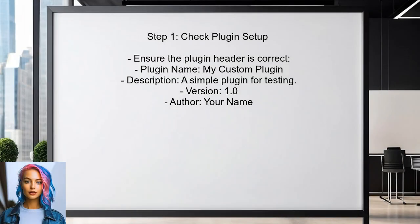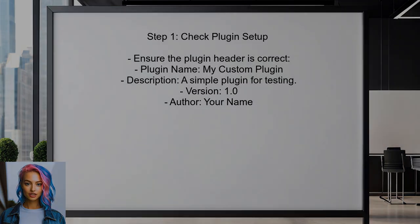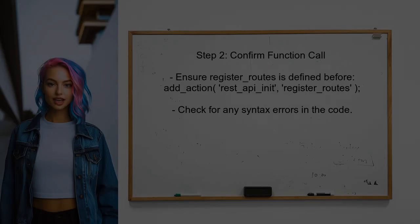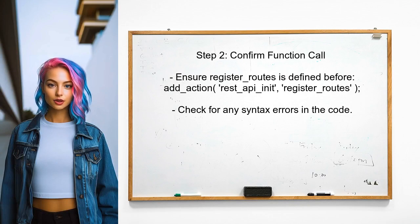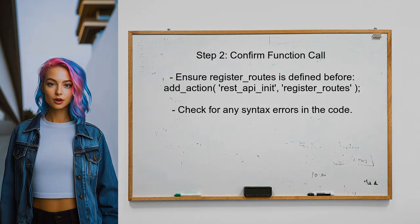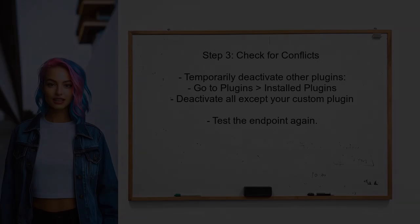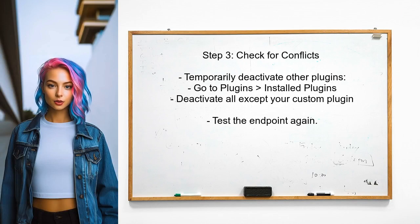To address the issue of the REST API init event not firing, the user should first ensure that their plugin is correctly set up and activated. This includes checking the plugin header information in the main plugin file. Next, the user should confirm that the add_action function is being called properly — ensuring that the register_routes function is defined before the add_action call.